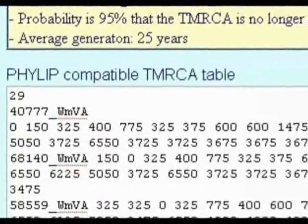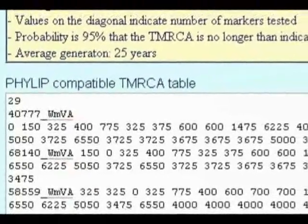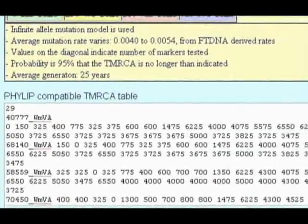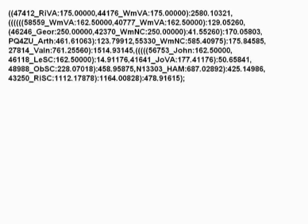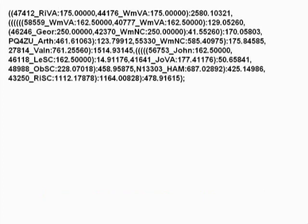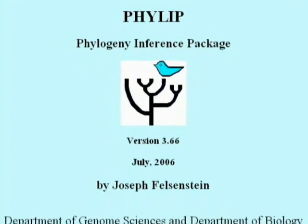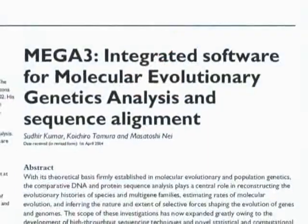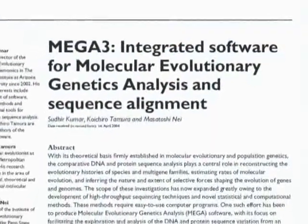In order to use the output from Dean McGee's utility, it is run through a program that converts Dean McGee's output into a charting format used by geneticists. This creates what geneticists call an output tree format, which can be viewed by tree-viewing software. Here's an example of the tree format. For these graphs, the Philips software program is used to convert Dean McGee's utility output into a tree format, and then the MEGA software is used to view that tree.